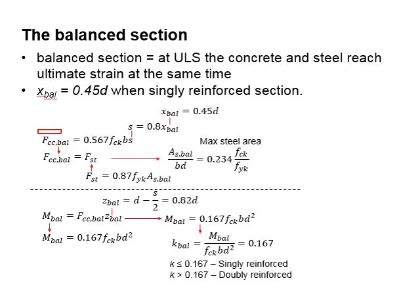The compressive force of the concrete is a function of the design stress times the effective area of the concrete that undergoes compression. The area is a function of the width of the section times the effective height of the compressive region, which is 0.8 times the x_balance.